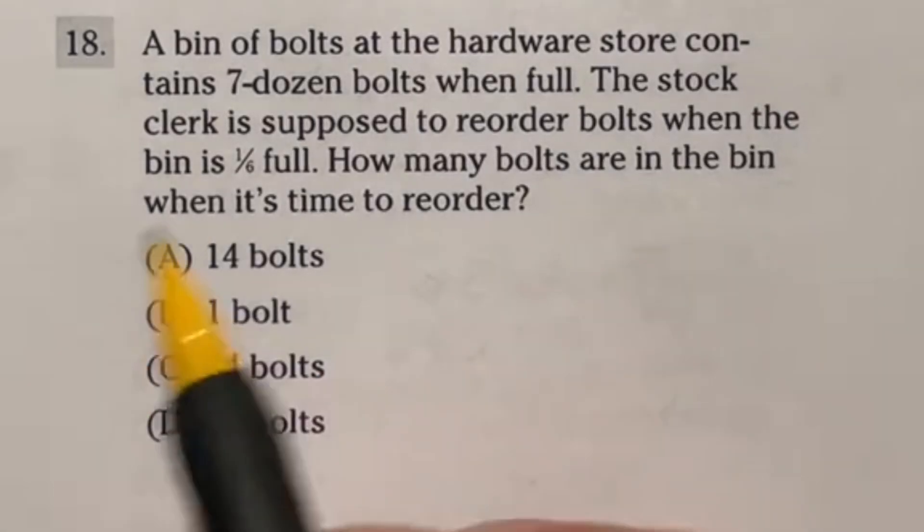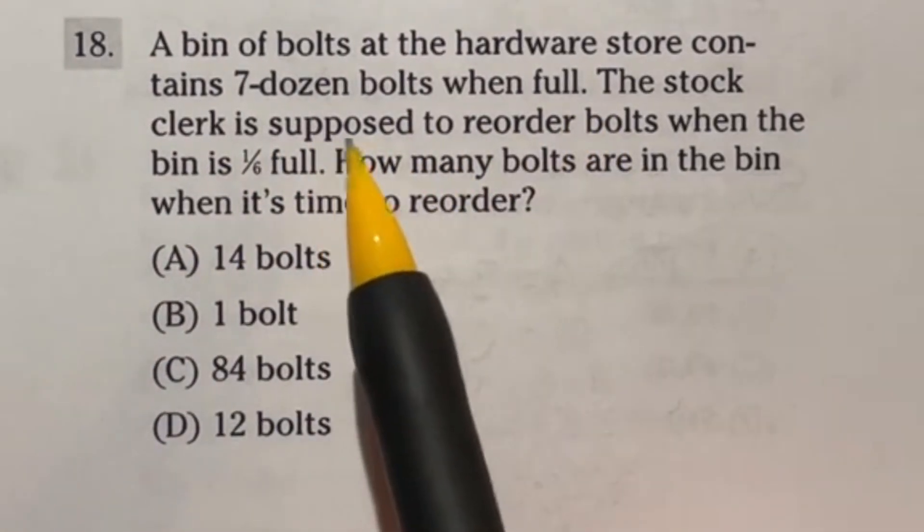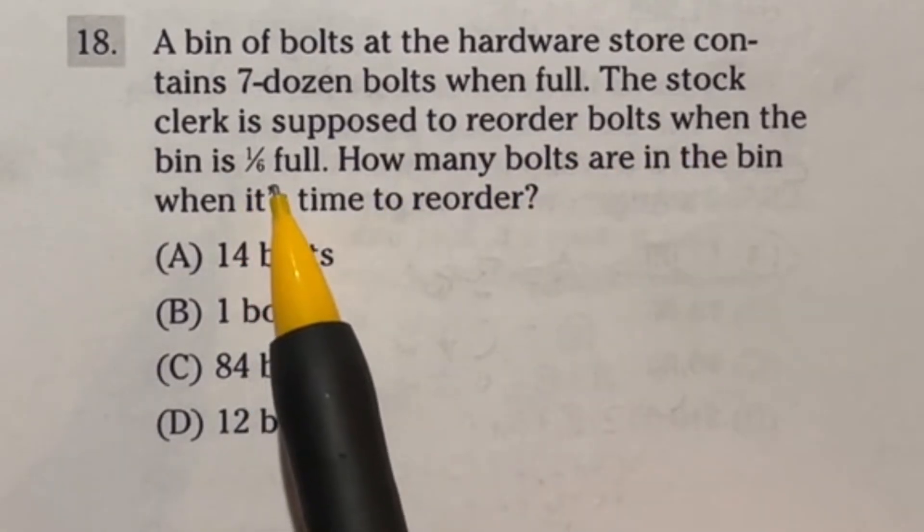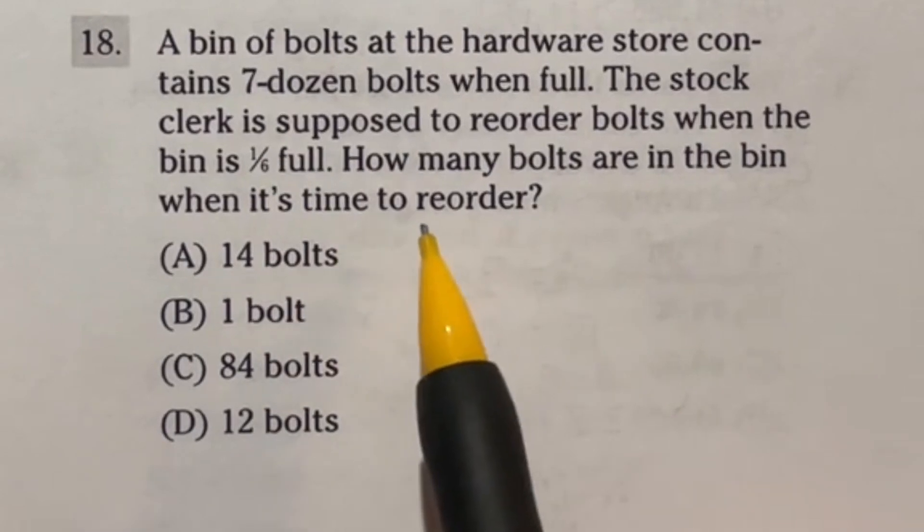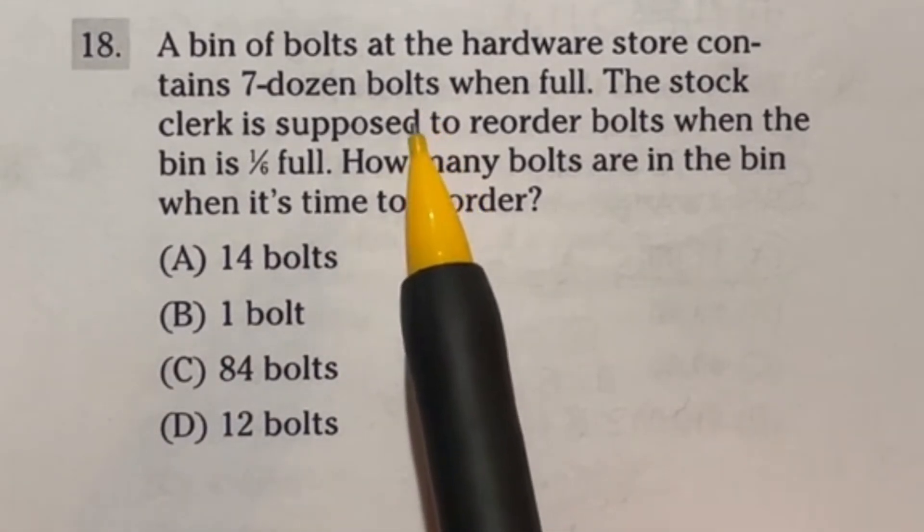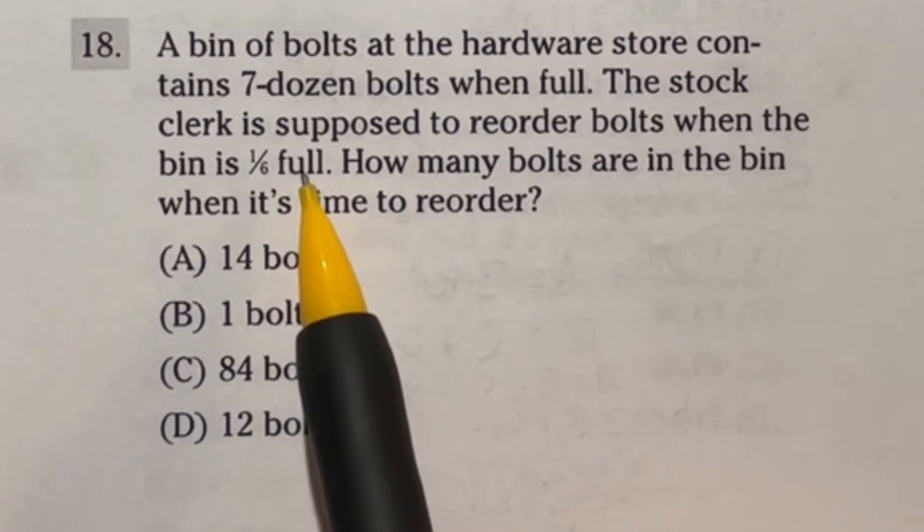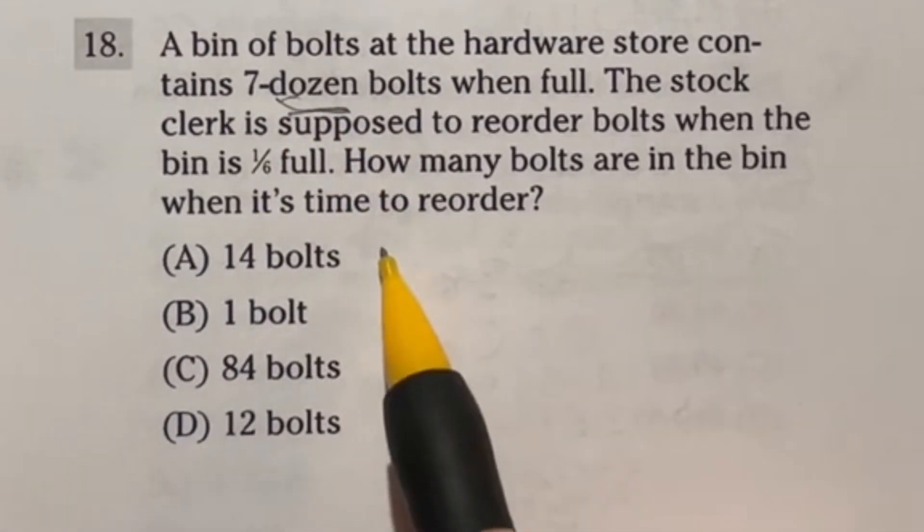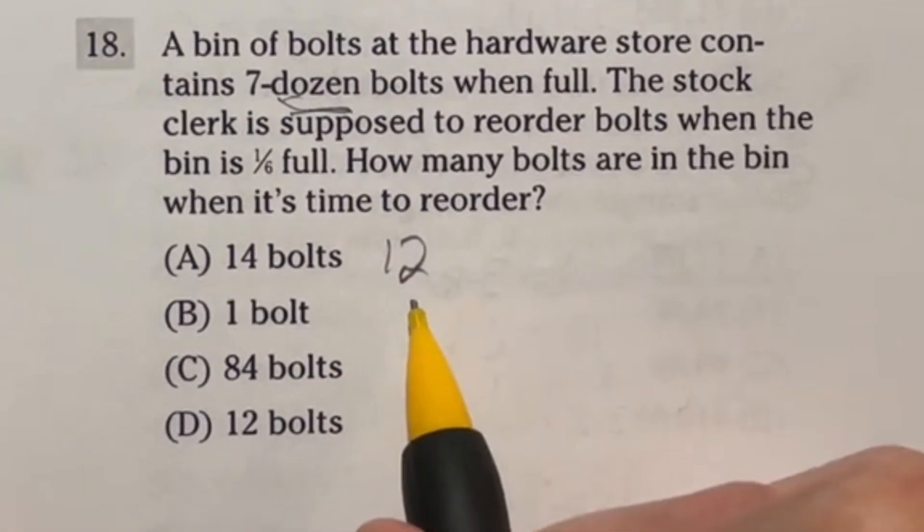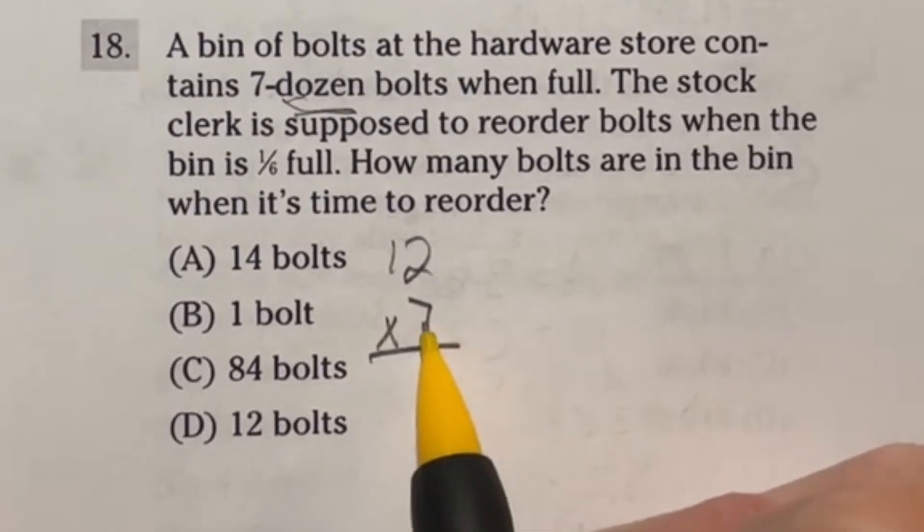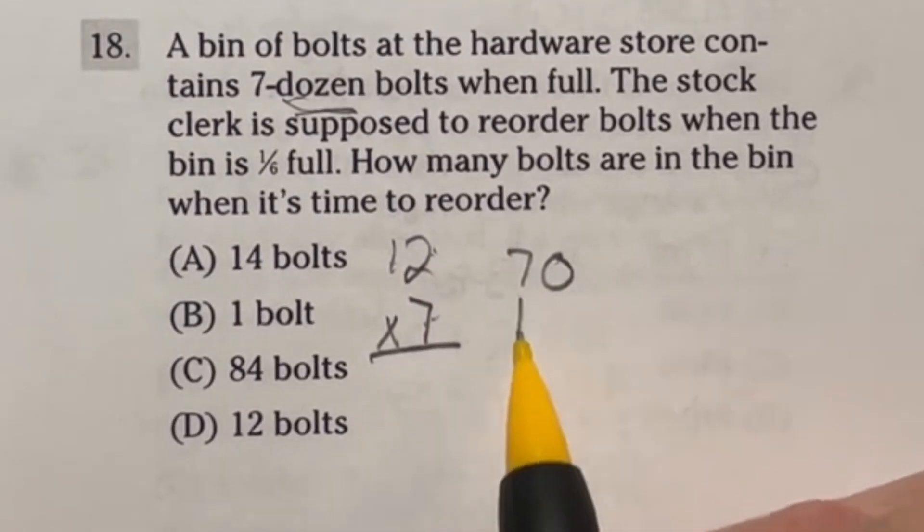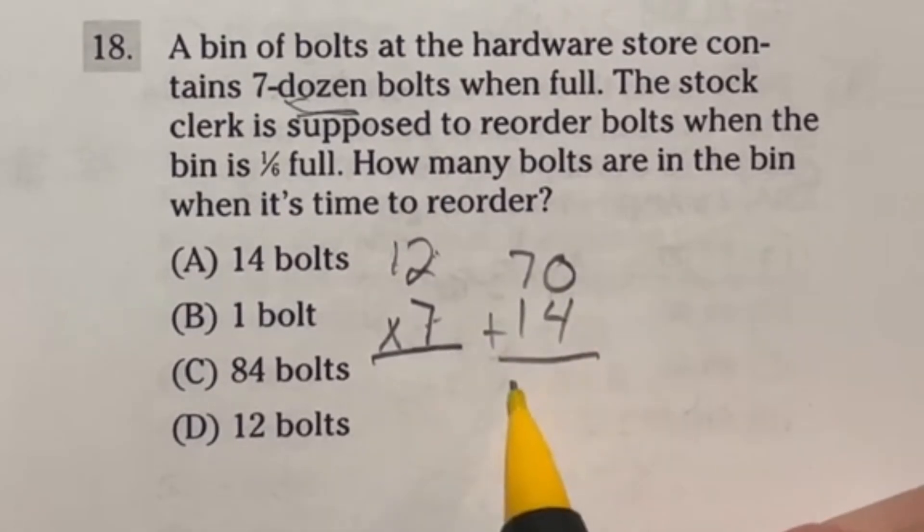Looking at number 18 on the ASVAB, it says a bin of bolts at the hardware store contains 7 dozen bolts when full. The stock clerk is supposed to reorder bolts when the bin is one-sixth full. How many bolts are in the bin when it's time to reorder? So this is a two-step problem. First, see how many bolts we originally have, and second, find out what one-sixth of that number would be. So first off, a dozen, what is that? Well, a dozen means there's 12 of them. Now, we're doing 7 dozen, so I'm going to break this down into two steps. We're going to multiply 12 by 7. Well, I know 7 times 10 is 70, and 7 times 2 is 14. So together, that's going to give me 84.